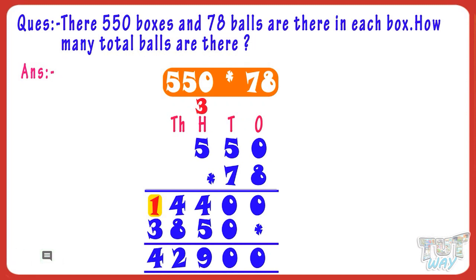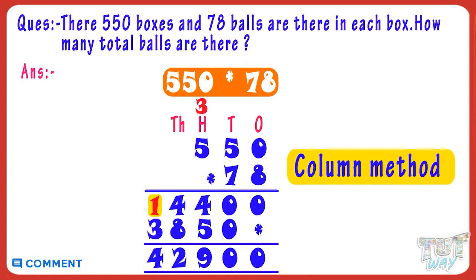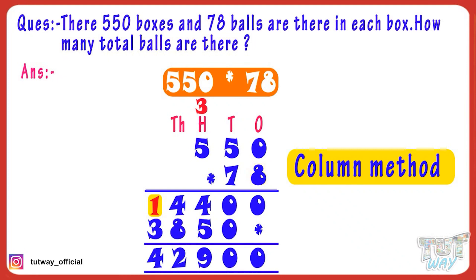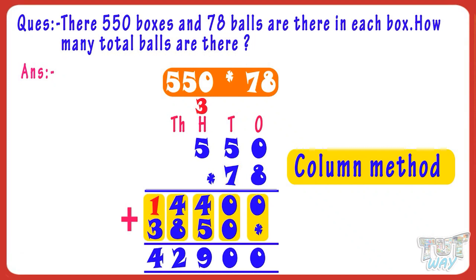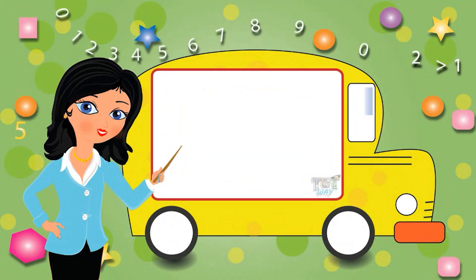So kids, we learned the column method of multiplication to multiply a number with a 2-digit number, where we first multiply with the 1's digit, then with the 10's digit, and then add both the products to get the answer. You need to do a lot of practice to be good at multiplication. Now go ahead and take a quiz to learn more!